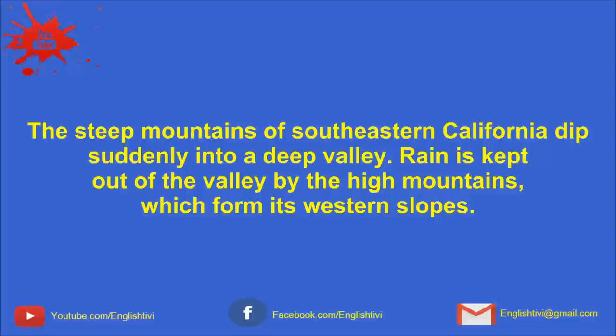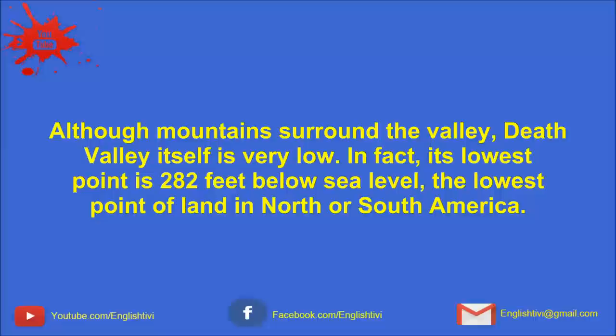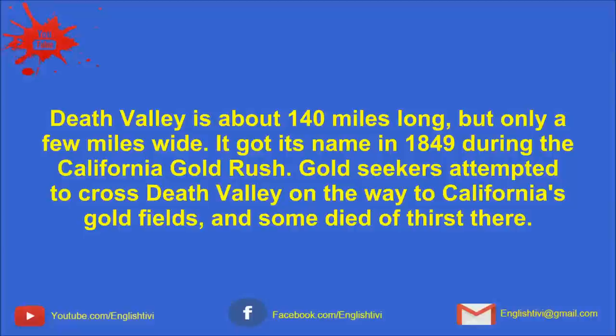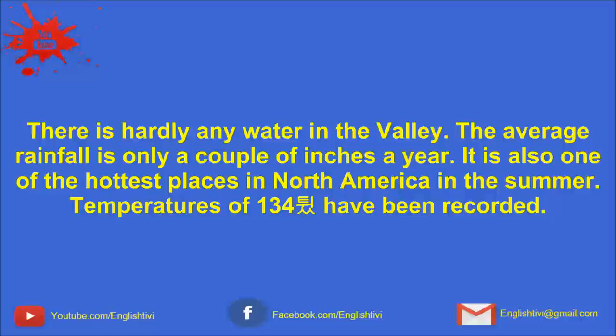The steep mountains of southeastern California dip suddenly into a deep valley. Rain is kept out of the valley by the high mountains, which form its western slopes. Although mountains surround the valley, Death Valley itself is very low. In fact, its lowest point is 282 feet below sea level, the lowest point of land in North or South America. Death Valley is about 140 miles long, but only a few miles wide. It got its name in 1849 during the California gold rush. Gold seekers attempted to cross Death Valley on the way to California's gold fields, and some died of thirst there.